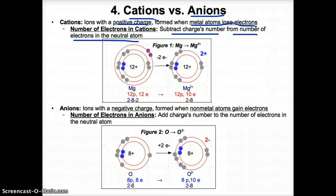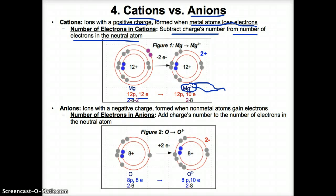In a neutral Mg atom, the atomic number of 12 tells us there are 12 protons and 12 electrons. If we form an Mg²⁺ ion, the plus charge tells us that electrons are lost, and the 2 specifically tells us that two electrons are lost. So we take 12 electrons from the neutral atom and subtract 2, giving 10 electrons in Mg²⁺. The number of protons stays the same at 12, because as long as you have the same element, you have the same atomic number.